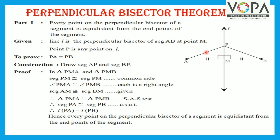Therefore, segment PA is congruent to segment PB as corresponding sides of congruent triangles. Now, if the segments are congruent, their lengths are equal. Therefore, length PA is equal to length PB. Hence, it is proved that every point on the perpendicular bisector of a segment is equidistant from the endpoints of the segment.